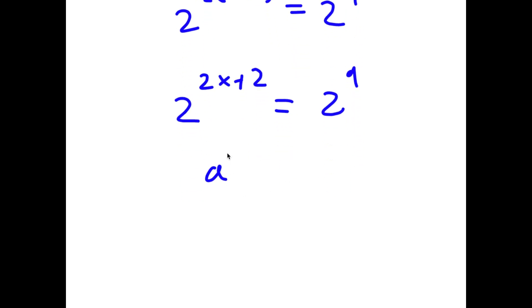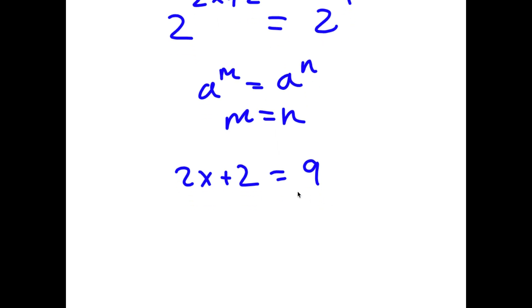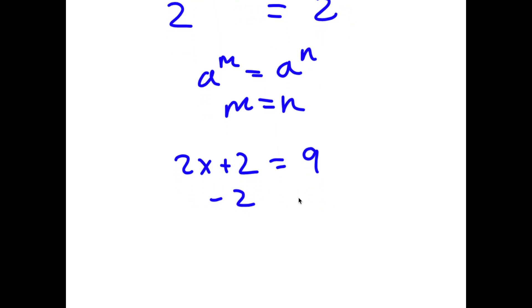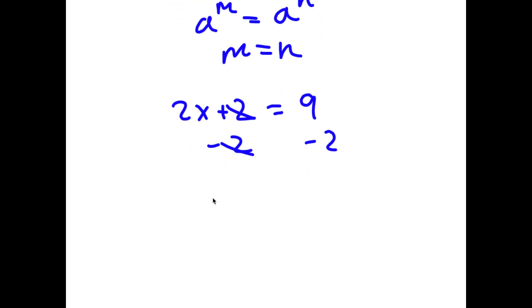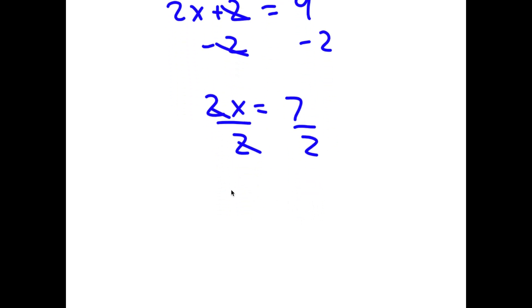Since the bases are equal, I can equate the exponents: 2x + 2 equals 9. Subtracting 2 from both sides gives 2x equals 7, and dividing both sides by 2 gives x equals 7 over 2.